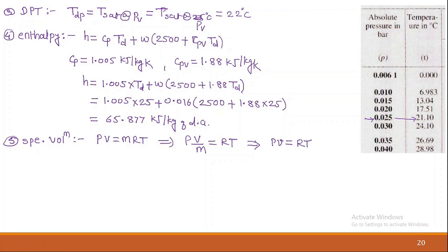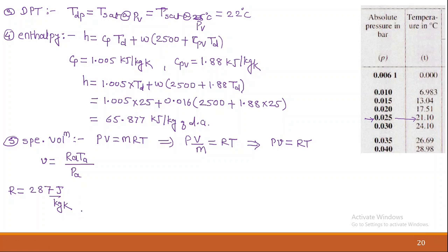For the specific volume of air: specific volume = R_air × T_a / P_a. The gas constant for air R = 287 J/kg·K. The atmospheric pressure P = 1.01325 bar, which must be converted to Pascal (multiply by 10⁵). The temperature T = 28°C must be converted to Kelvin: 28 + 273 = 301 K.